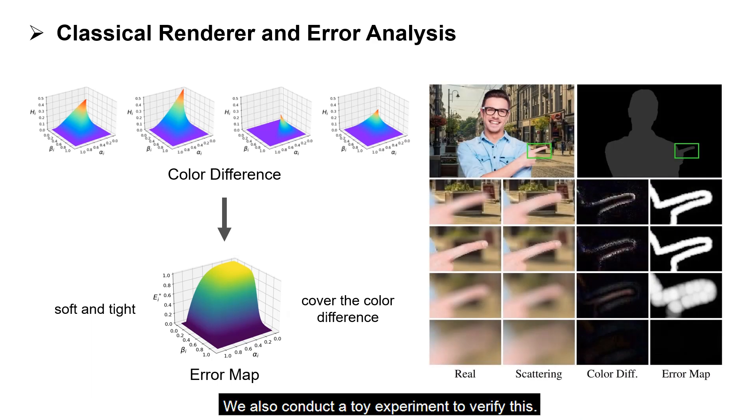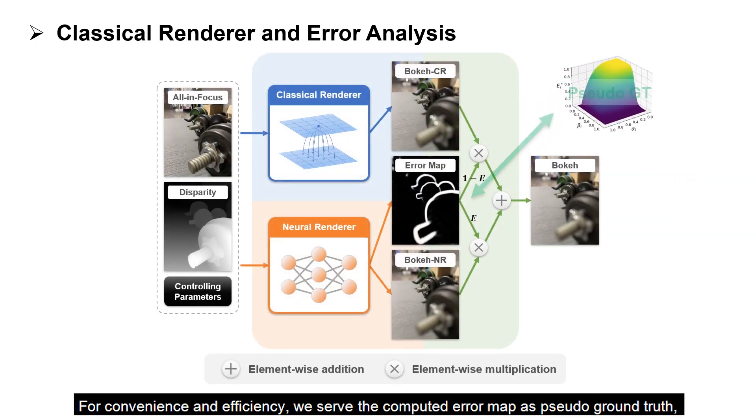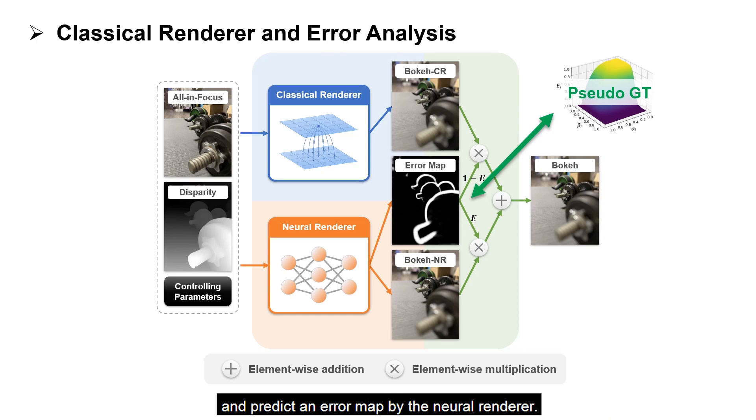We also conduct a toy experiment to verify this. For convenience and efficiency, we serve the computed error map as pseudo-ground truth, and predict an error map by the neural renderer.